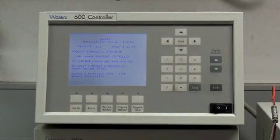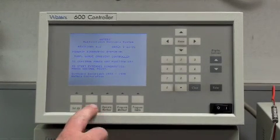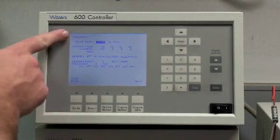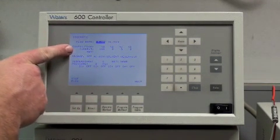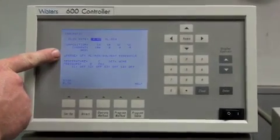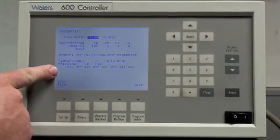You must then choose the channel for the mobile phase you're going to be using. This is achieved by pressing this button here, direct. As you can see here, you've got flow rate. You've got the channels, which is determined here. And this is the information about how the pump is operating.